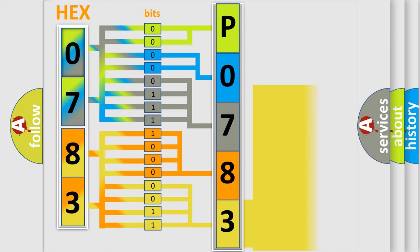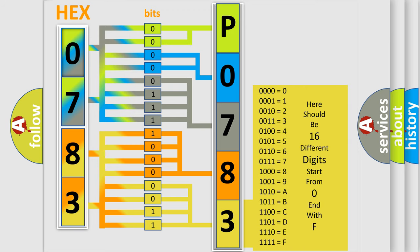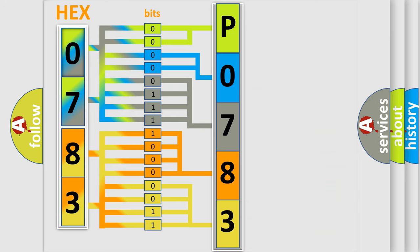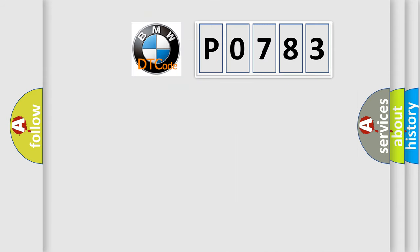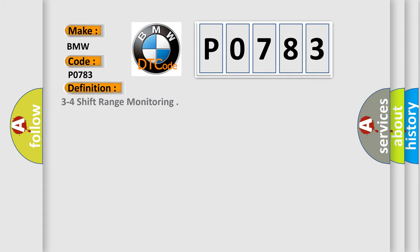A single byte conceals 256 possible combinations. We now know in what way the diagnostic tool translates the received information into a more comprehensible format. The number itself does not make sense if we cannot assign information about what it actually expresses. So, what does the diagnostic trouble code P0783 interpret specifically for BMW car manufacturers? The basic definition is: 3 to 4 shift range monitoring.